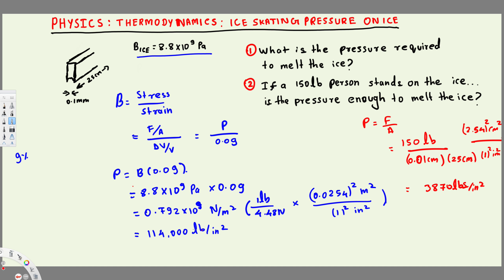This value of 3,870 pounds per inch squared is not enough to melt the ice, because we need 114,000 pounds per inch squared. We don't have enough pressure, so this person cannot melt the ice. That's how we do this kind of problem.